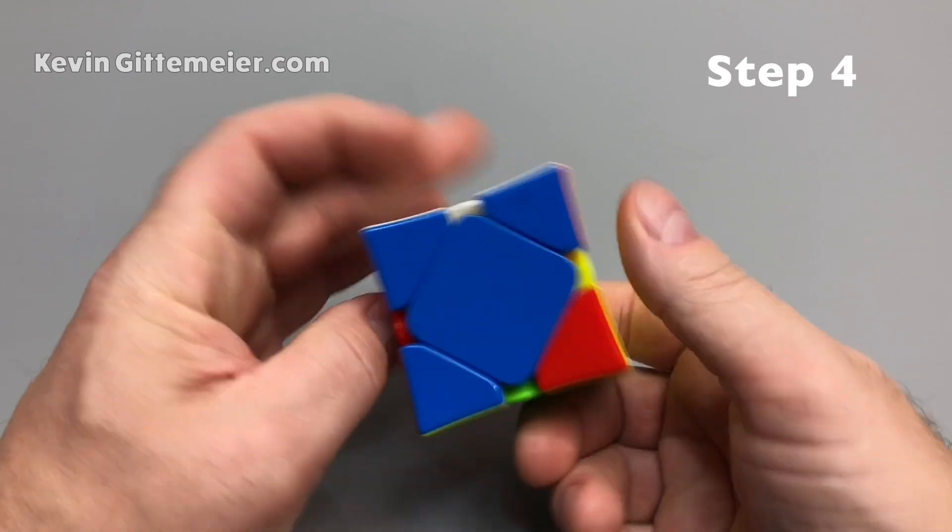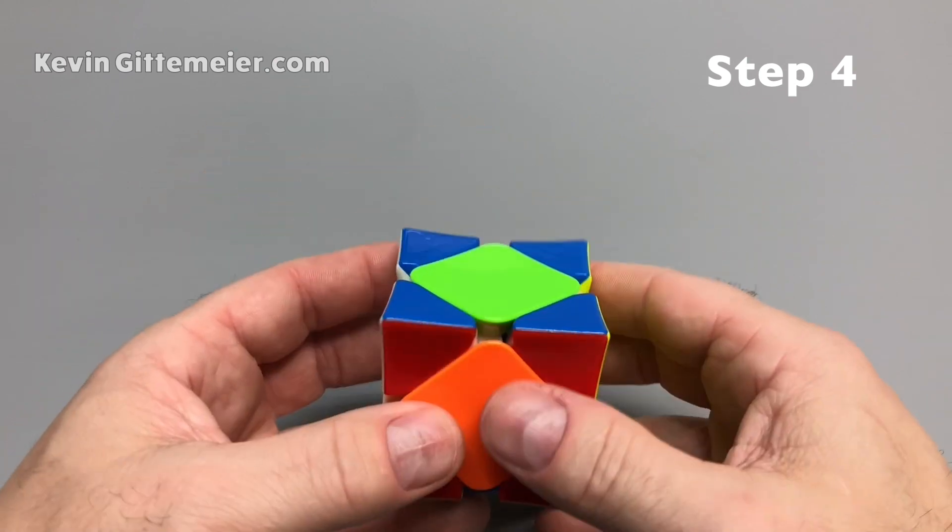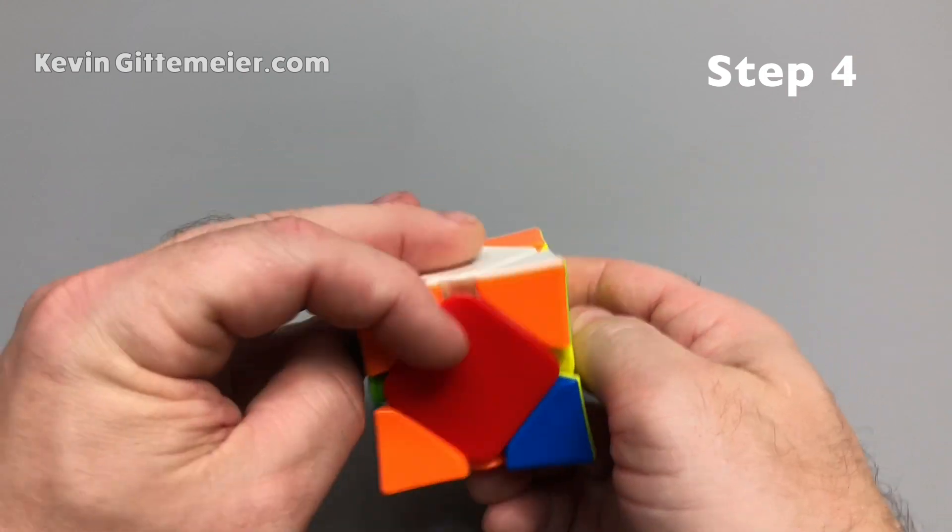Okay. So what if you don't have a solved side? Now, if our yellow solved and our white solved and we don't have any other pieces solved, that's okay. We just pick any color to be the bottom. It doesn't matter. We do our sequence.